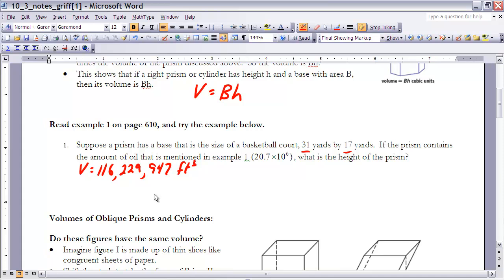What is the height of the prism? Well we know from example one in the book and they went through the calculations for that that if you have 20.7 times 10 to the sixth barrels that that's the equivalent of 116,229,947 cubic feet. So what we're going to do is we're going to be working with things in terms of cubic feet.